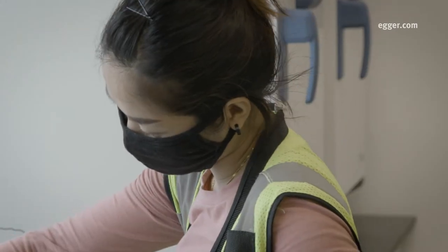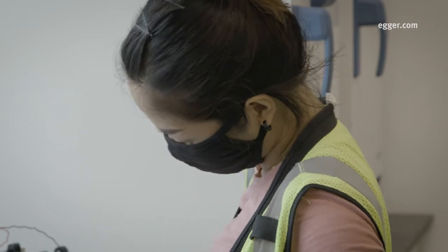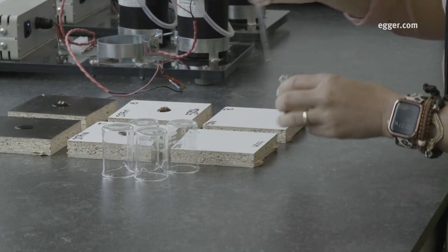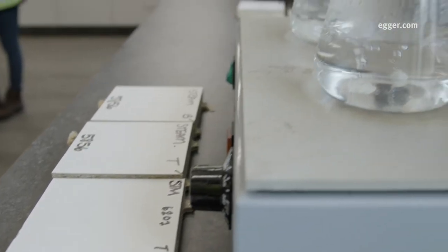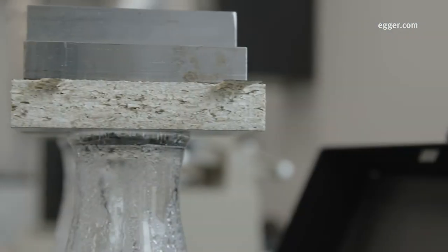A scratch test applies a diamond tip with varied force. The stain test uses coffee or other staining agents. Boards are also subjected to steam and heat to determine their quality.